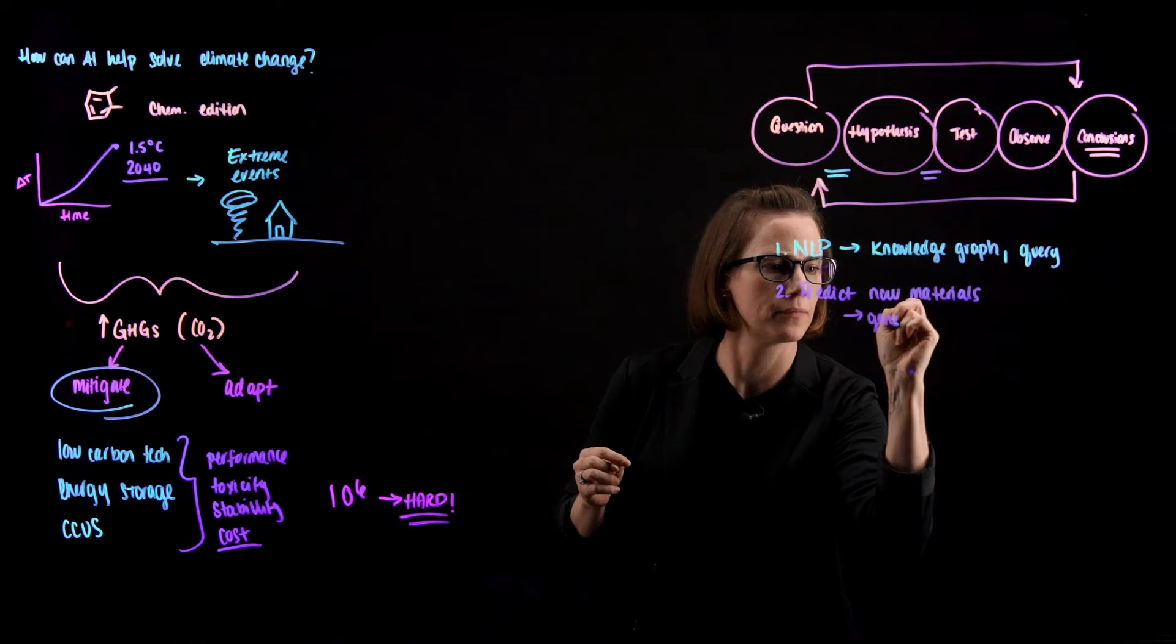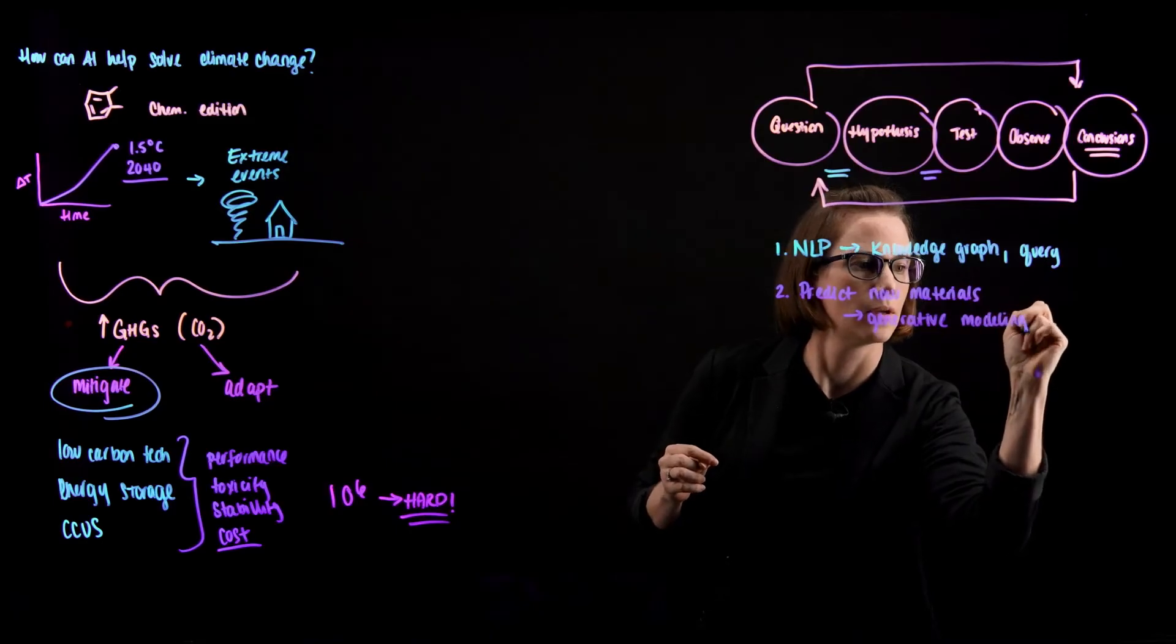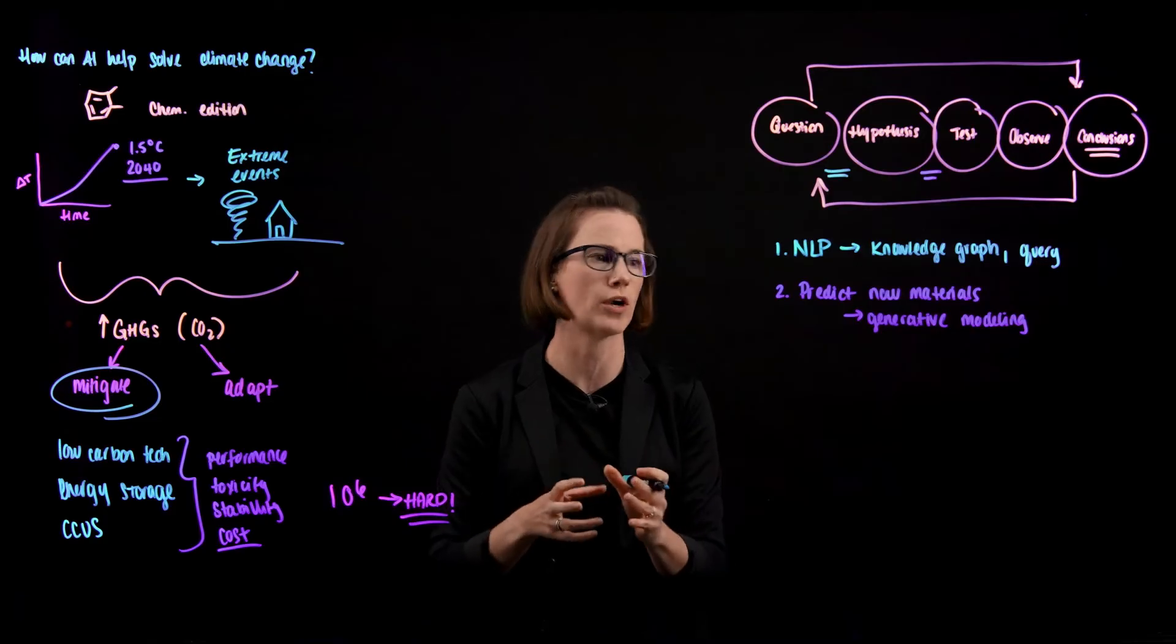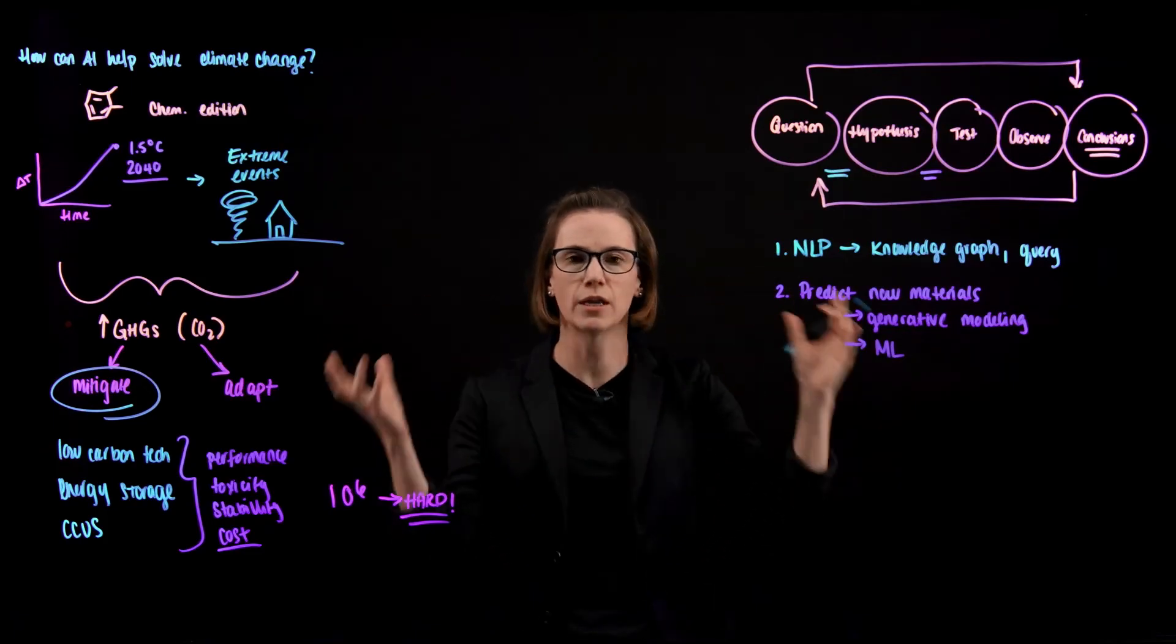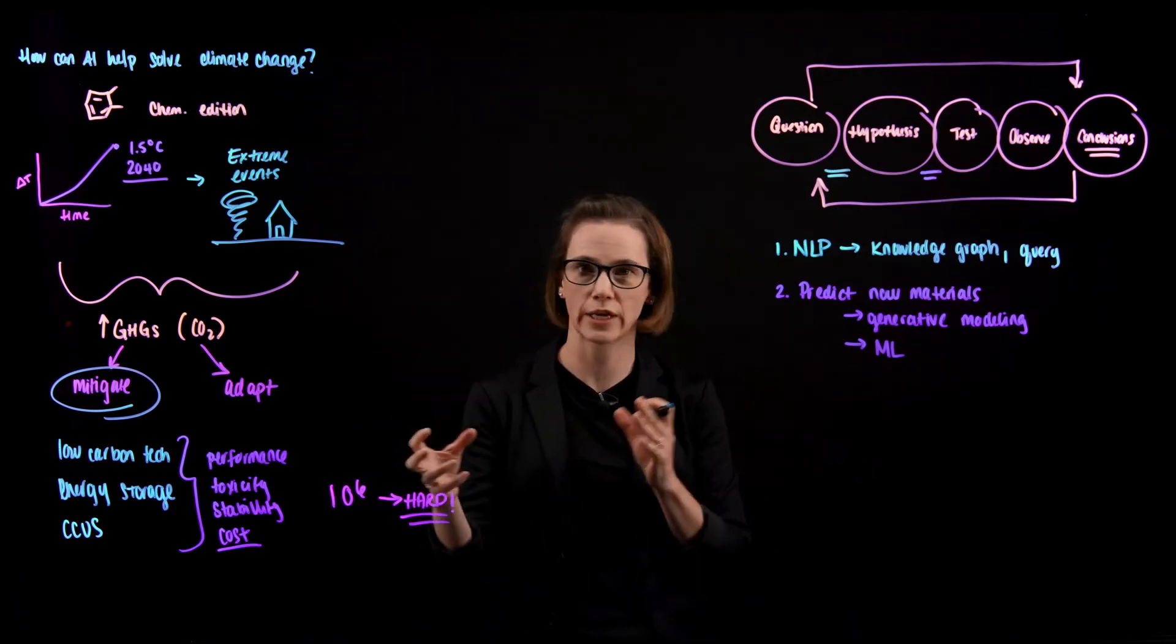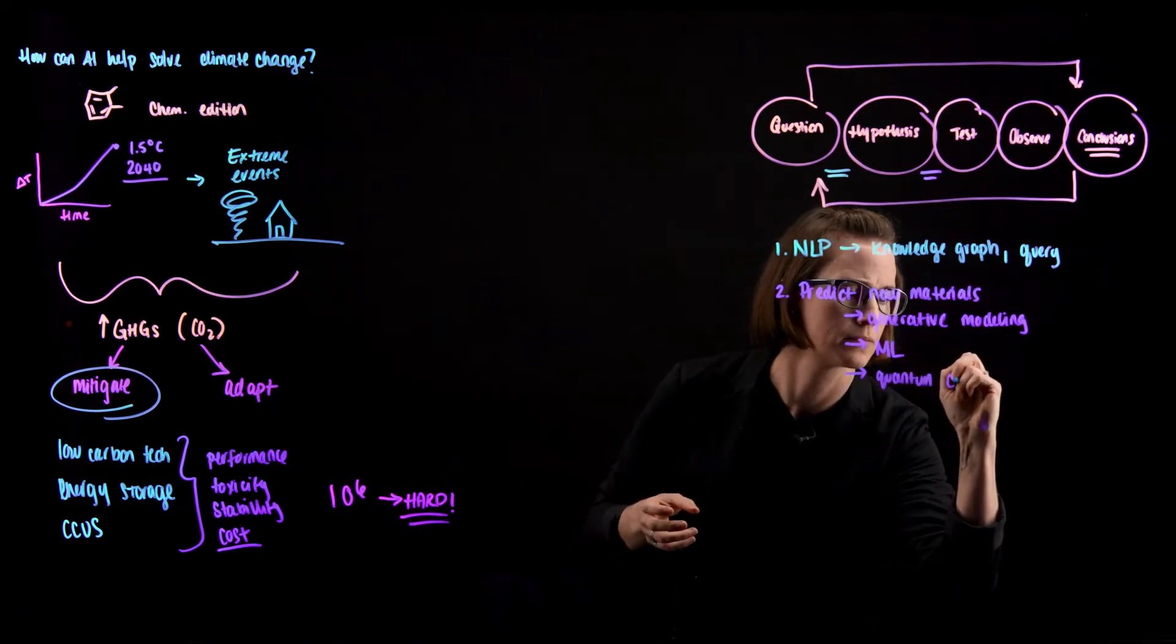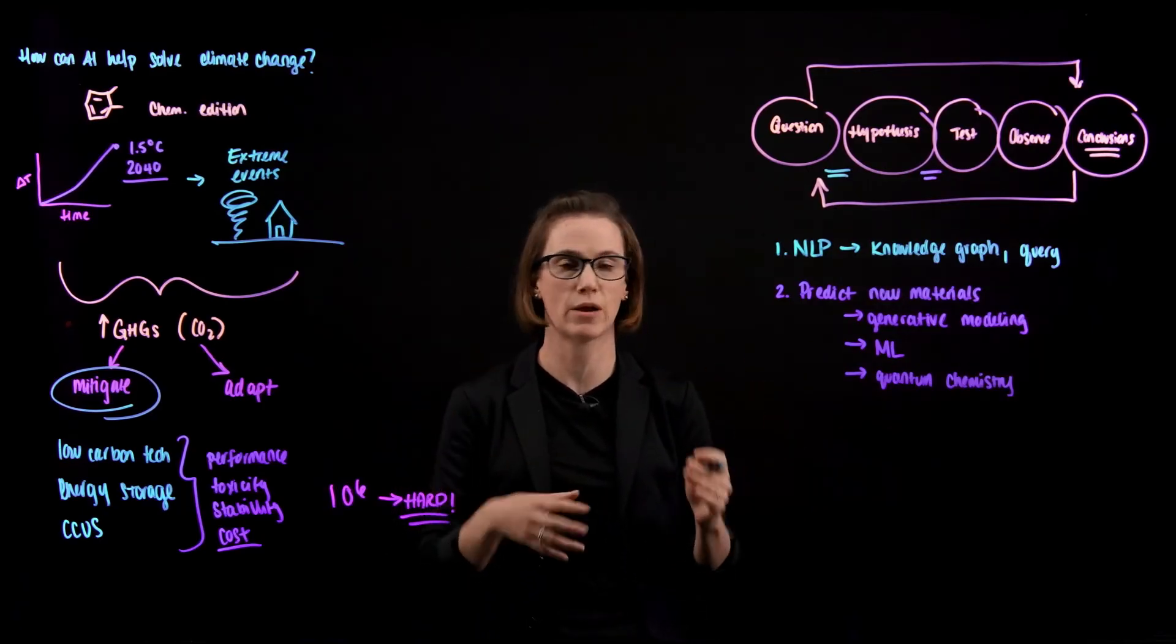And we can do this through generative modeling. And this allows us to set boundaries and say, we want a material that has these properties or these performance metrics. And we can start to predict new chemistries and new materials that meet those requirements. We can also use data-driven techniques like machine learning to bring in large data sets. So say we have a data set on the performance of thousands of solvents. We can start to look at how we mix those together to actually predict new mixtures that can outperform what's there today. And then we can use other techniques like quantum chemistry. And this can allow us to predict single properties of materials and how they might perform and rank them against each other.